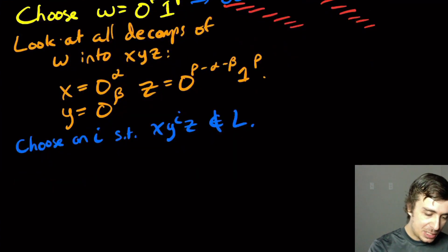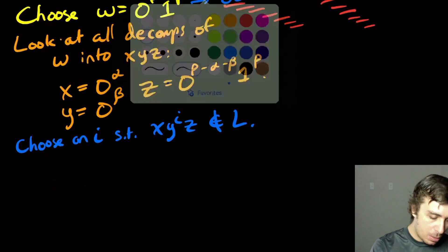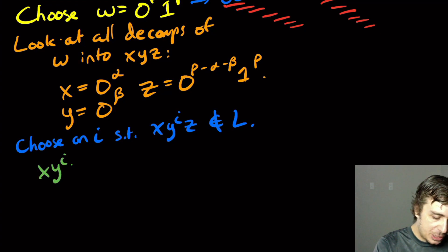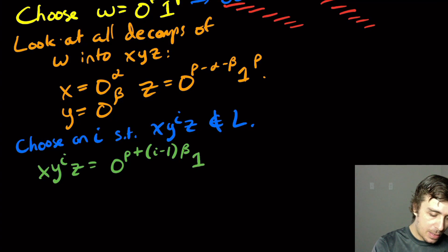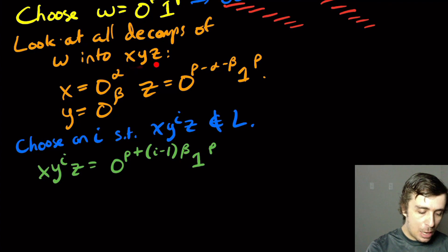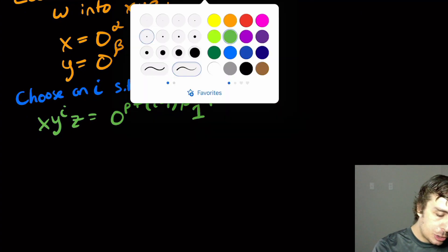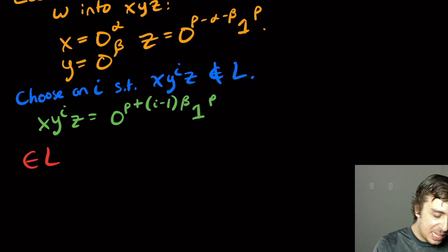Well, what is this? If you actually compute it, it's going to be 0^(P + (i-1)β) 1^P. Because the alphas get killed off, we have i beta right here because that's how many choices of Y we have, and then we have minus one beta from this. So that's where the i-1 comes from.